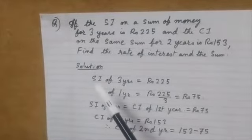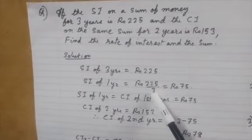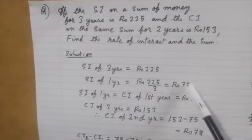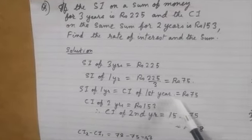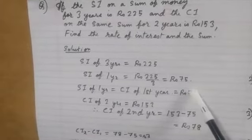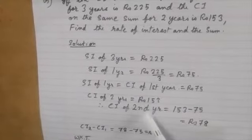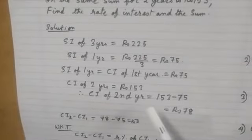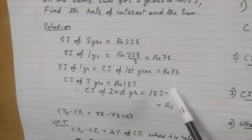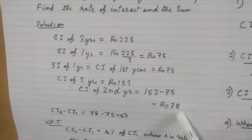The solution: simple interest for three years is rupees 225, so simple interest for one year is 225 divided by 3, which is rupees 75. Simple interest of one year is equal to compound interest of the first year, so CI of year one is rupees 75. Compound interest for two years is given as rupees 153, so compound interest of the second year is 153 minus 75, which is rupees 78.